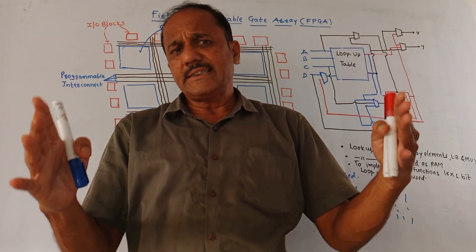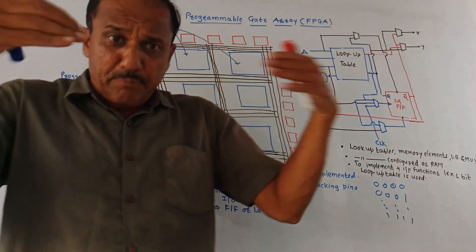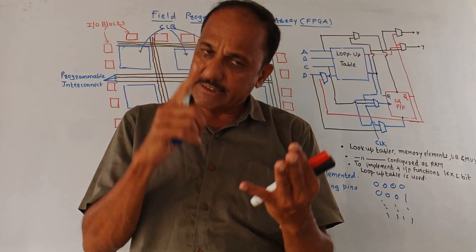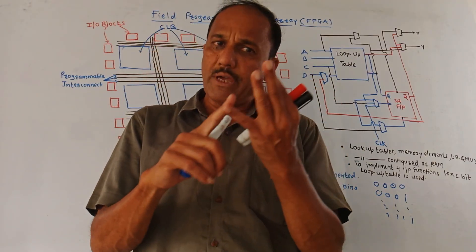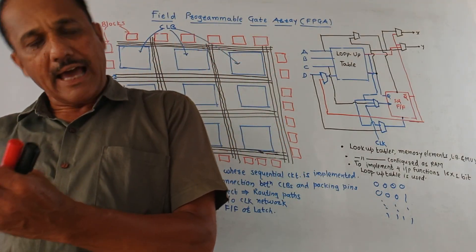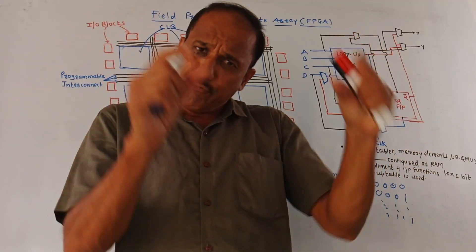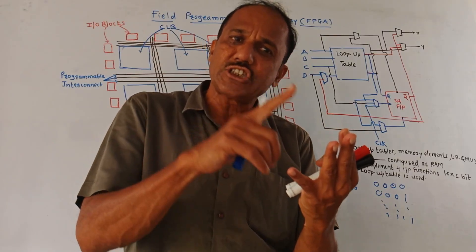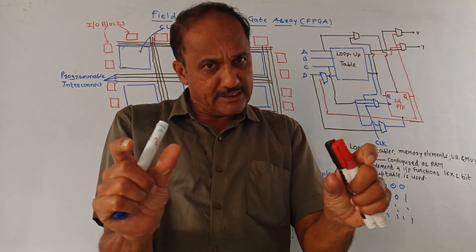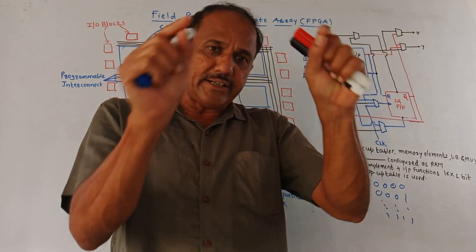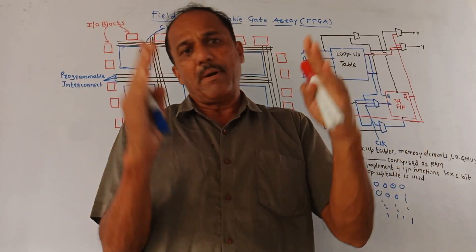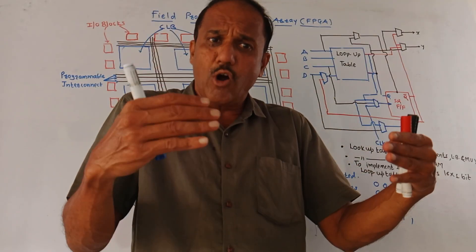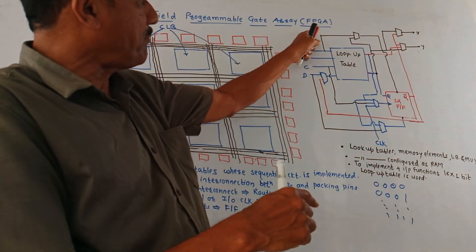Before that, let us say there are many subsystems, there are many logical circuitries which we want to interconnect. So to interconnect such logical circuitries, it is required to make use of global control signals as well as global data signals. Before the discovery of FPGA or such devices, people were using custom integrated circuits to interconnect different logical circuitries. But the problem was the interconnection was complicated as well as there was a problem of time delay. To avoid this, nowadays FPGAs are used.